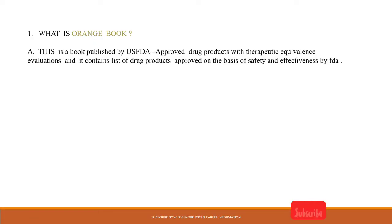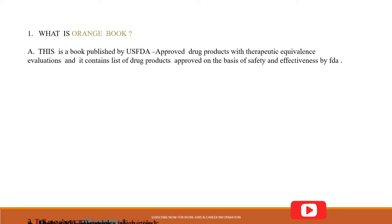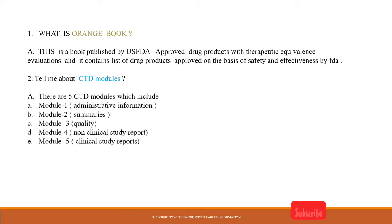Coming to the first question: What is the Orange Book? This is a book published by the US FDA — 'Approved Drug Products with Therapeutic Equivalence' — and it contains therapeutic evaluations of drug products approved on the basis of safety and effectiveness by the Food and Drug Administration. The Orange Book is a reference available to the general public, industry persons, and doctors.